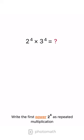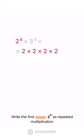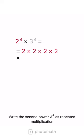Write the first power 2 to the 4th as repeated multiplication. Copy the multiplication sign. Write the second power 3 to the 4th as repeated multiplication.